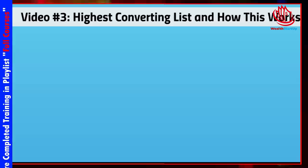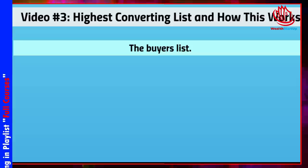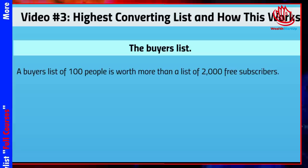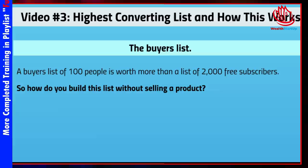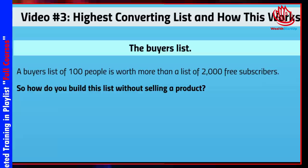Welcome back. This is video number three and we're going to talk about the highest converting list and how it works. This is the buyer's list — a list of 100 people is worth way more than a list of 2,000 free subscribers. These are people who actually know you. They have purchased a product — somebody else's product — but they still know you and have seen you on the thank you page.